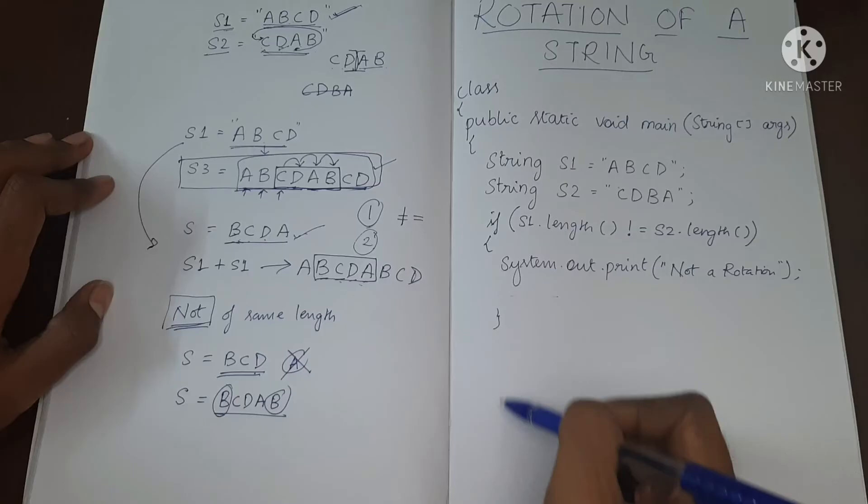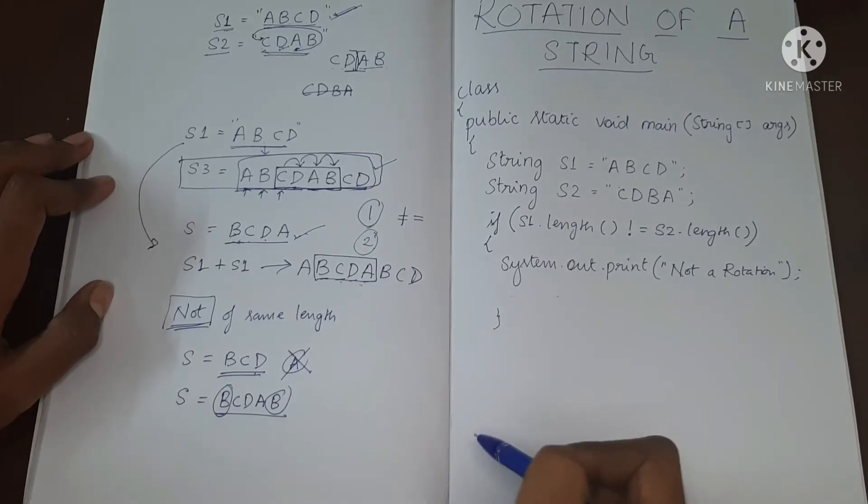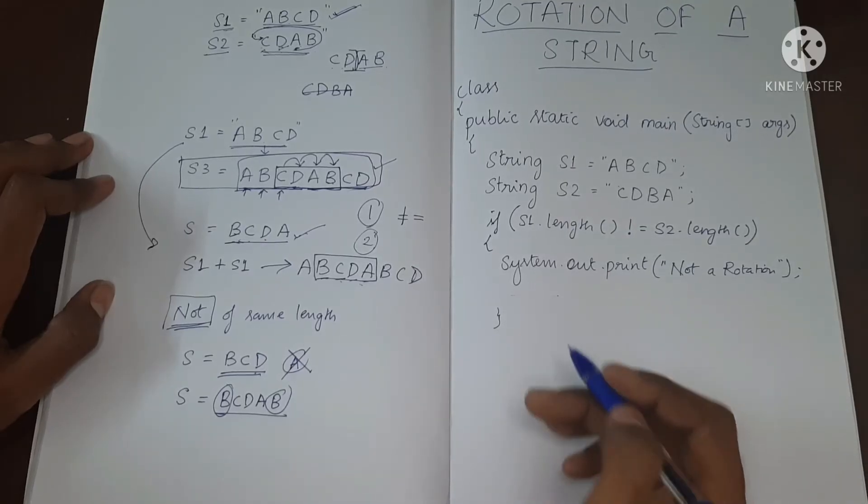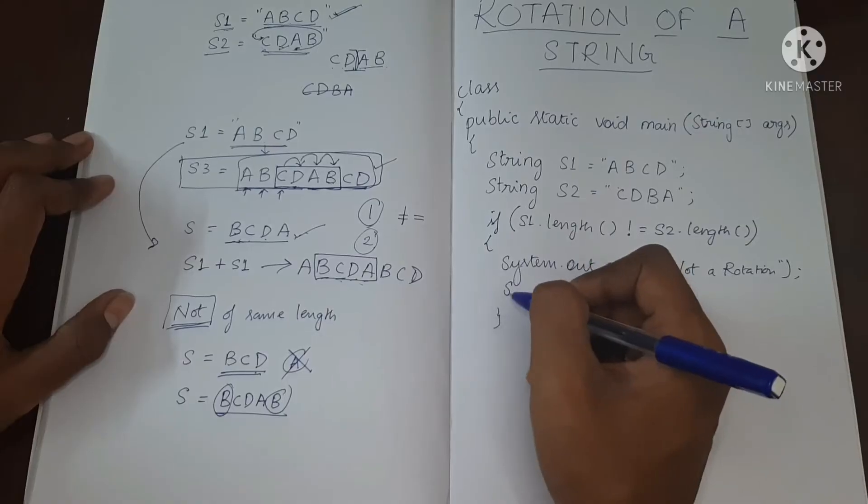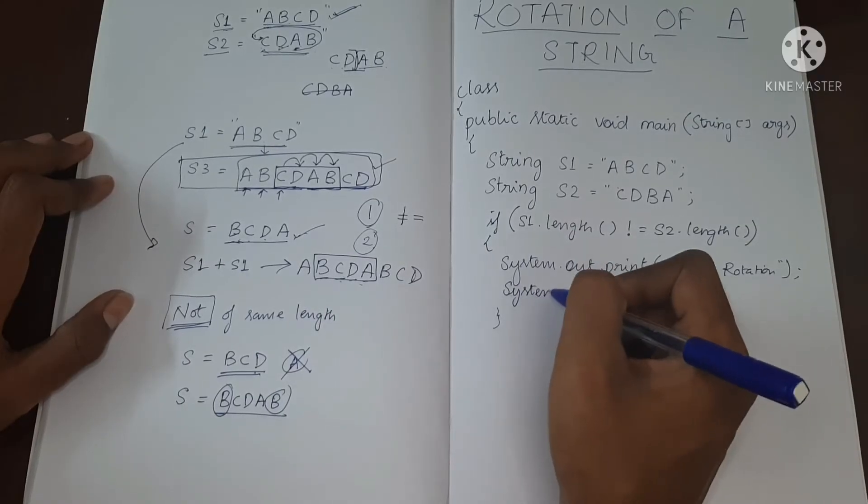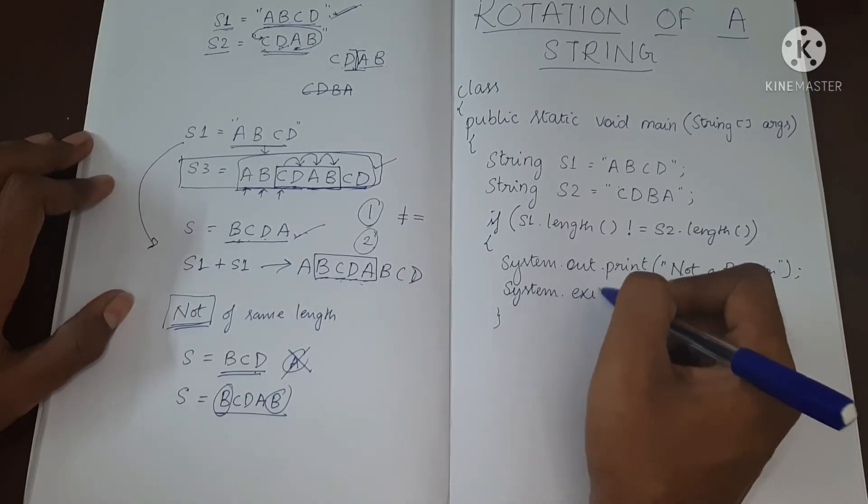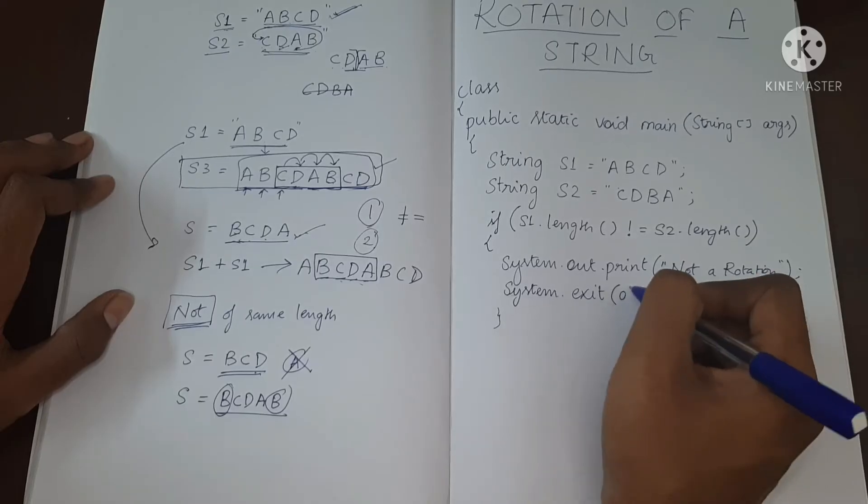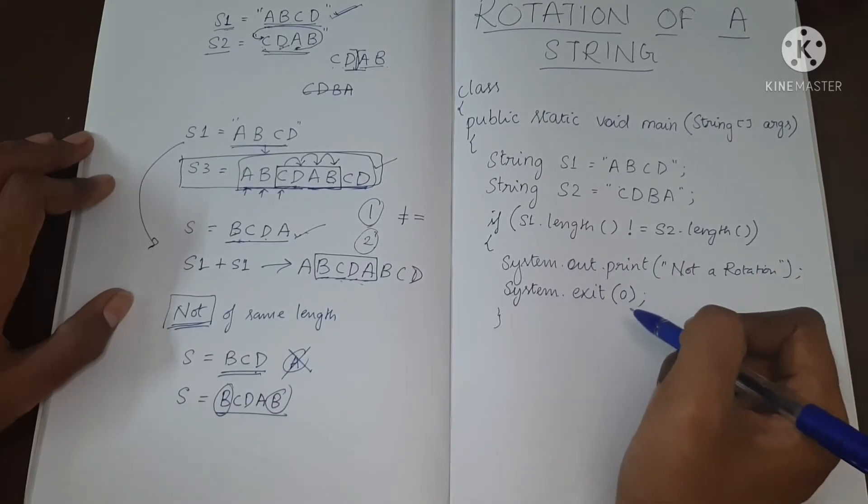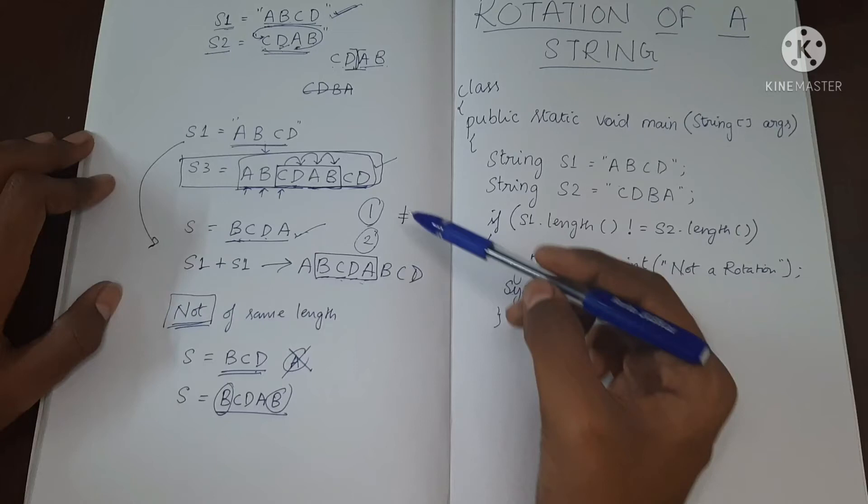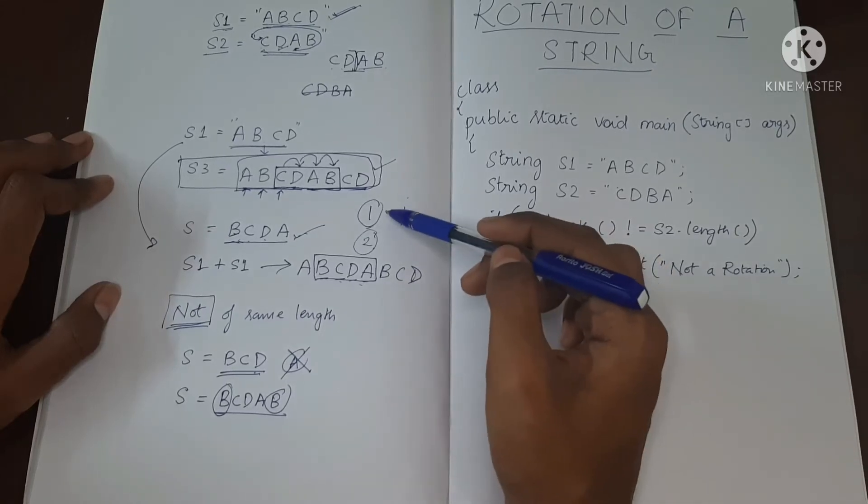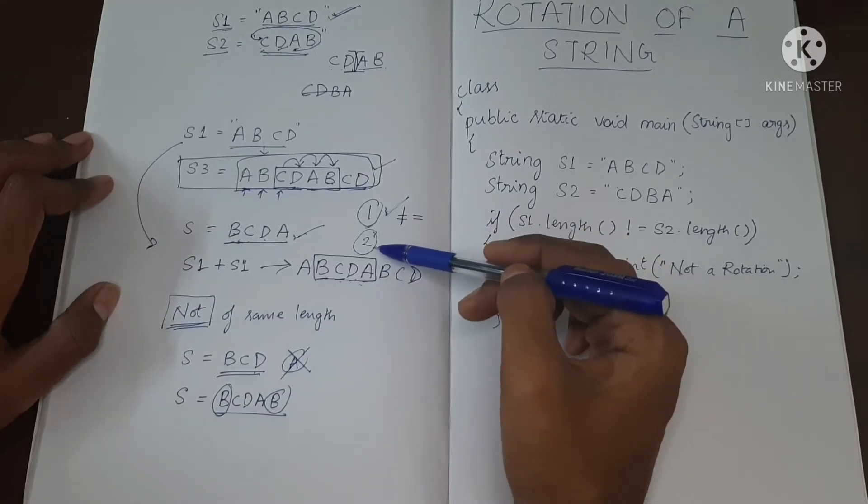Okay, so that it won't execute the remaining part of the program and waste your execution time. So let's just exit the program. We will use System.exit and this is zero. Okay, so this part is done now. Now let's move on to the second part.